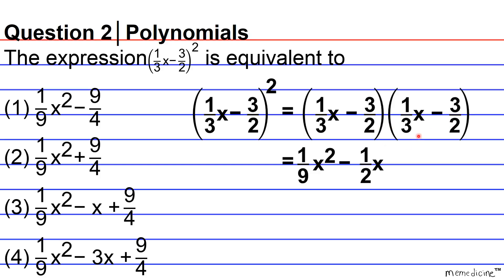And then when you multiply the two inside terms, well the three cancels in the numerator as well as in the denominator and you get another negative 1/2x.